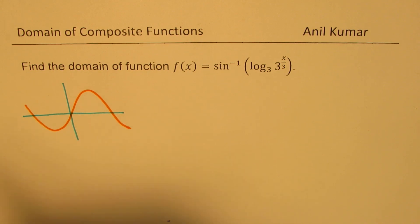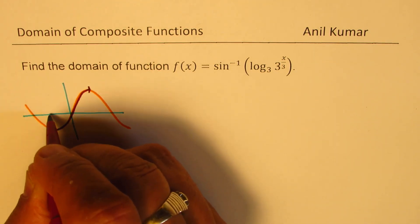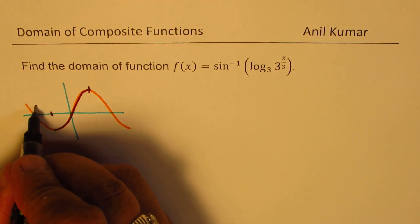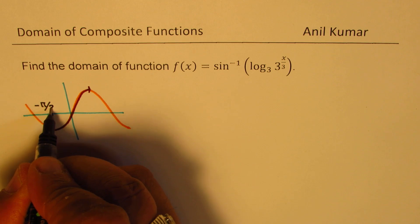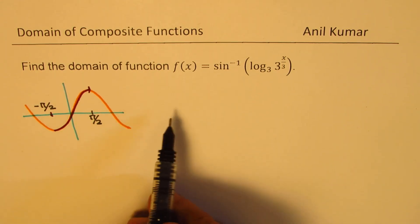So only portion which we consider is between minus pi by 2 to plus pi by 2. Within this restricted domain from minus pi by 2 to plus pi by 2 we could have inverse of sine function.